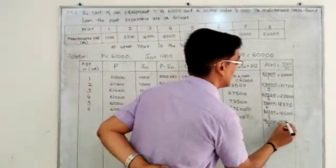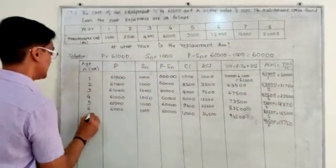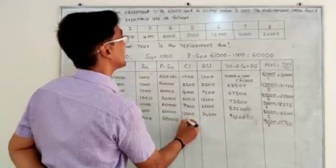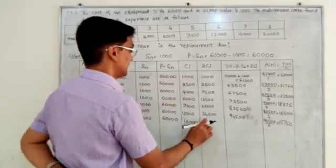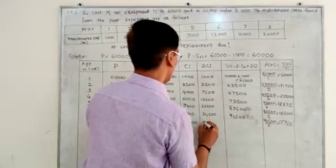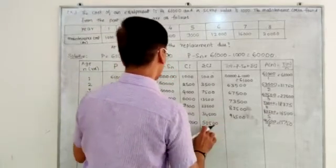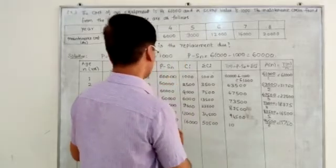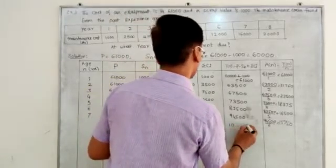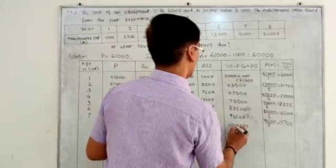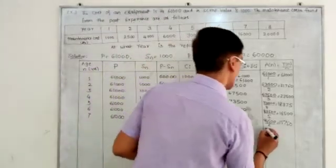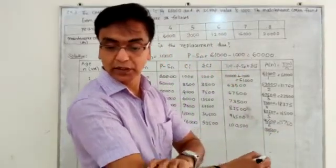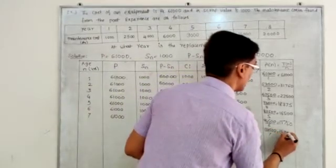For the seventh year: P is 61,000, P minus S_N is 60,000. C_I is 16,300, and cumulative C_I is 16,300 plus 34,000 equals 50,500. So 60,000 plus 50,500 is 1,10,500, and 1,10,500 divided by 7 equals approximately 15,785.7.